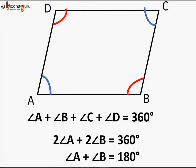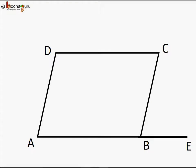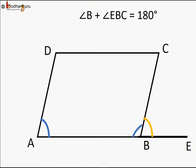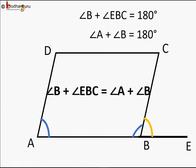The same way we can show angle C + angle D = 180°, meaning the sum of any two adjacent angles is 180°. Now we extend AB to a point E. We know angle B + angle EBC = 180°, and also angle A + angle B = 180°. Therefore angle B + angle EBC = angle A + angle B, and cancelling angle B we get angle EBC = angle A.